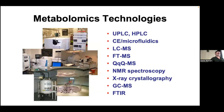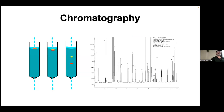Standard methods in metabolomics include ultra-performance liquid chromatography (UPLC), high-performance liquid chromatography (HPLC), capillary electrophoresis, and coupling these separation methods to mass spectrometry (LC-MS) or gas chromatography (GC-MS). We also use high-resolution mass spectrometers like Orbitraps or Fourier transform mass specs, lower-resolution instruments like triple quads, NMR instruments, crystallography, and even electron microscopy to characterize chemical structures. Metabolomics uses a vast range of tools because the chemical diversity is so huge — it's not one gene sequencer or one ELISA assay.